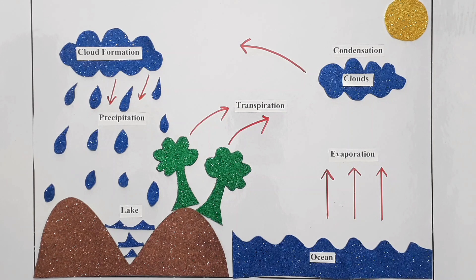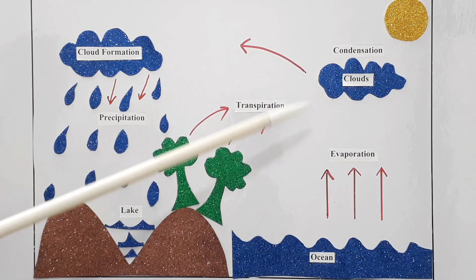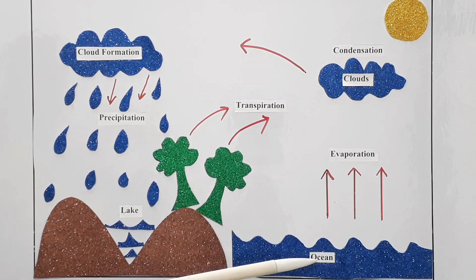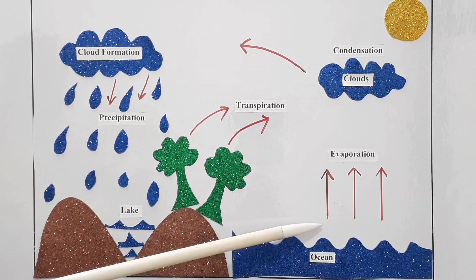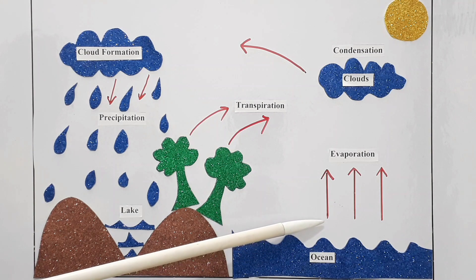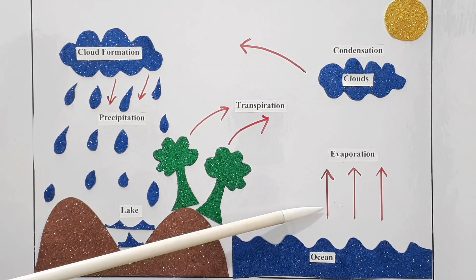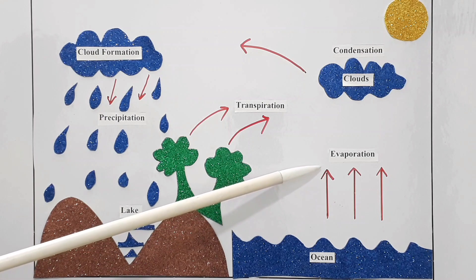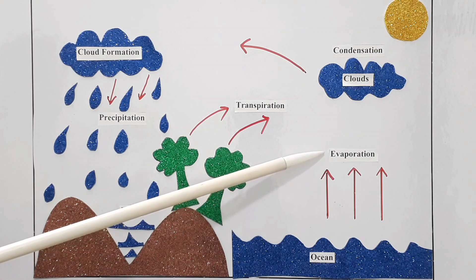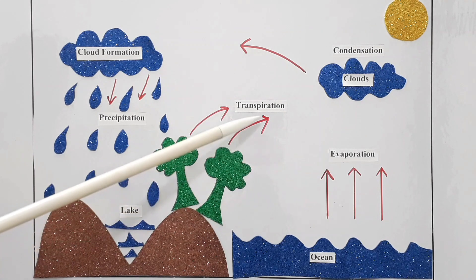Let us understand the cycle with the help of a diagram. The Sun heats the water in water bodies. The water from these water bodies changes into water vapor and rises in the sky with warm air. This process is called evaporation.